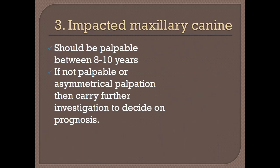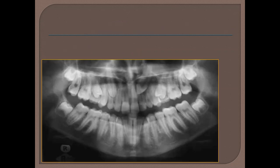Impacted maxillary canines are more common. The canine should start to bulge buccally between the age of 8 to 10. During routine review every six months during the mixed dentition, you should palpate for buccal bulging of the canine. If you fail to palpate it, or can palpate on one side but not the other, further investigation is necessary. For example, a canine on the left side with palatal displacement may migrate across the root of the lateral incisor toward the central incisor — early detection is critical.